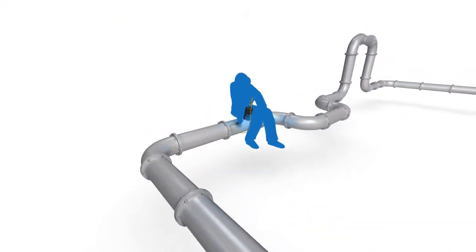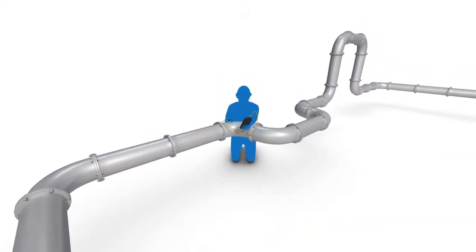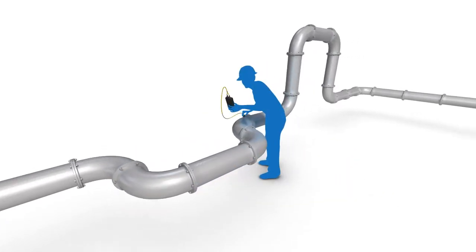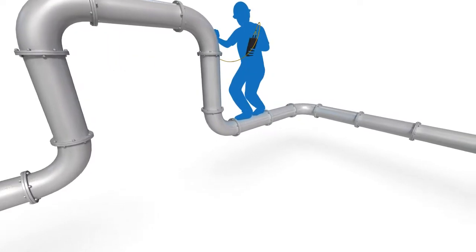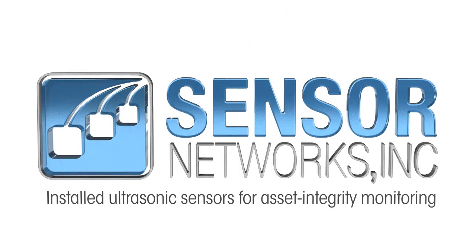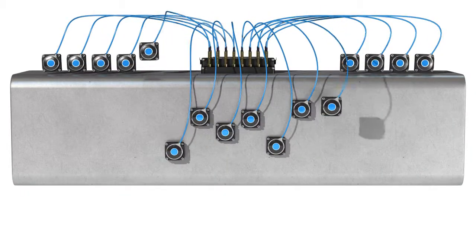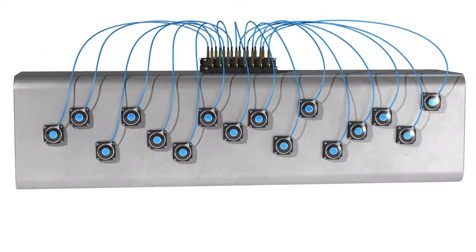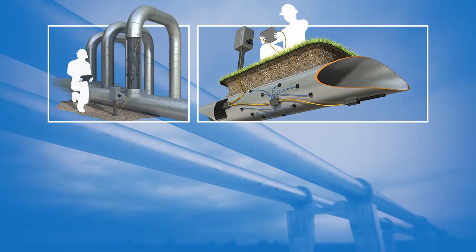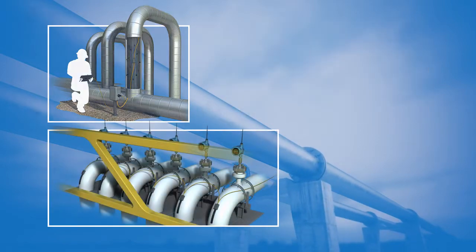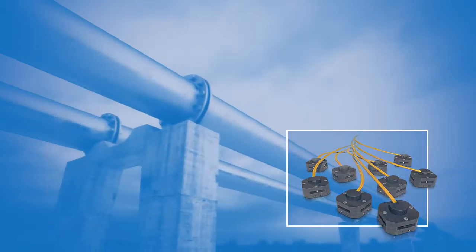Until now, inspecting for corrosion, erosion, and cracking was a slow manual process, fraught with safety risks, high cost, and poor data integrity. But Sensor Networks is changing that, with a new breed of automated corrosion monitoring technology based on installed ultrasonic sensors — a technology capable of accurately measuring remaining wall thickness and calculating corrosion and erosion rates.